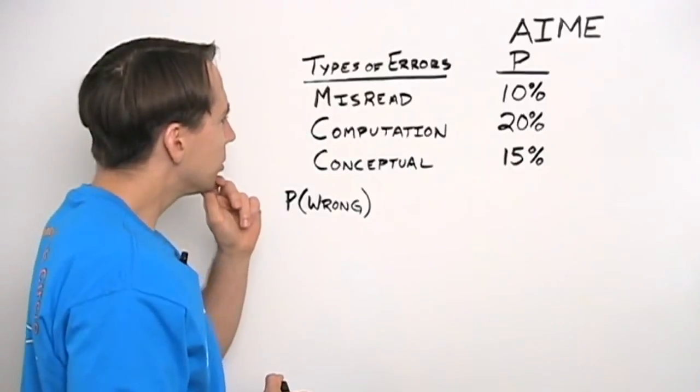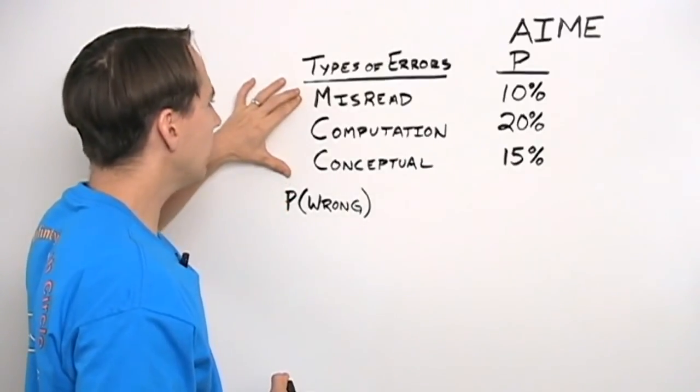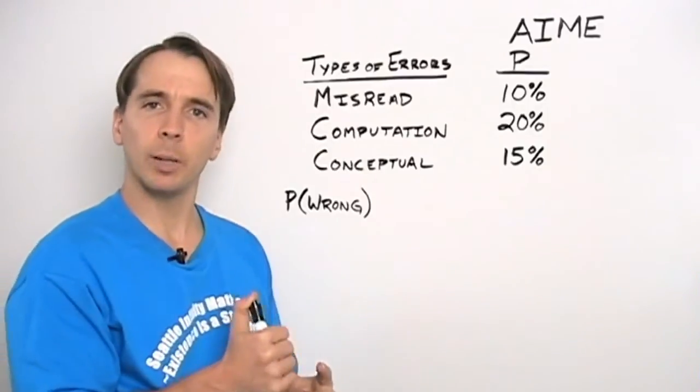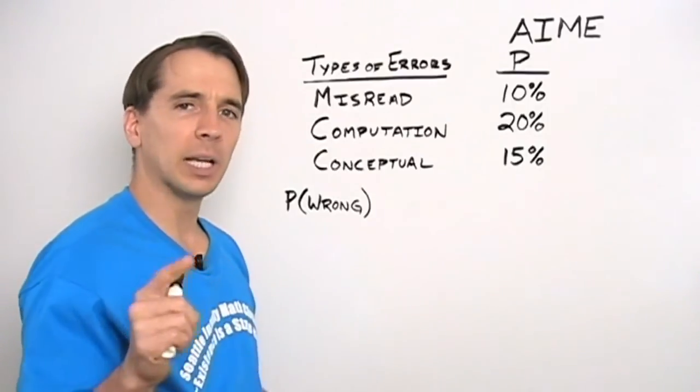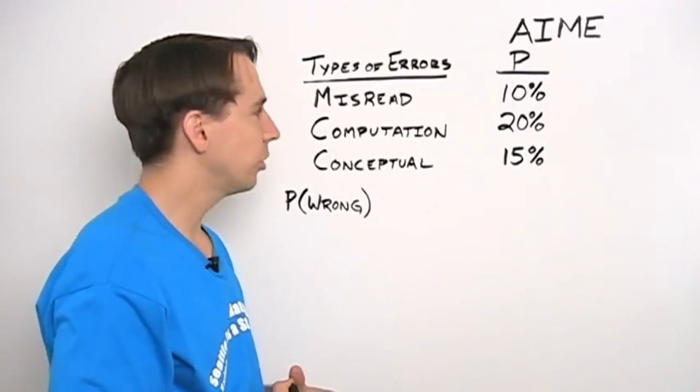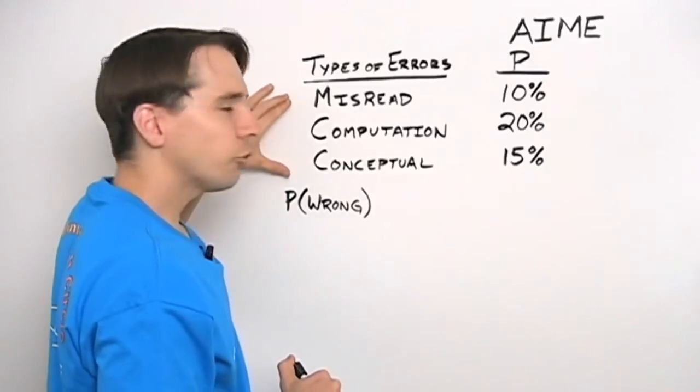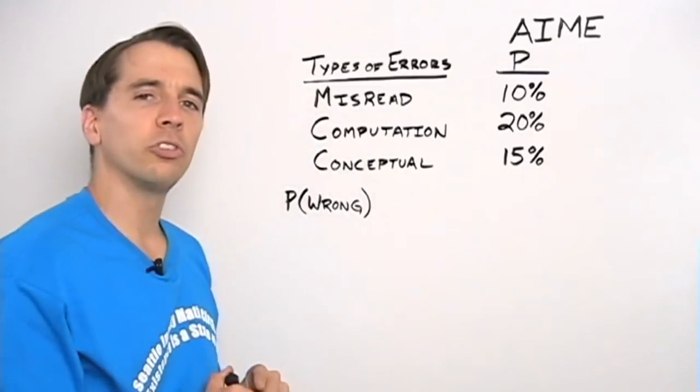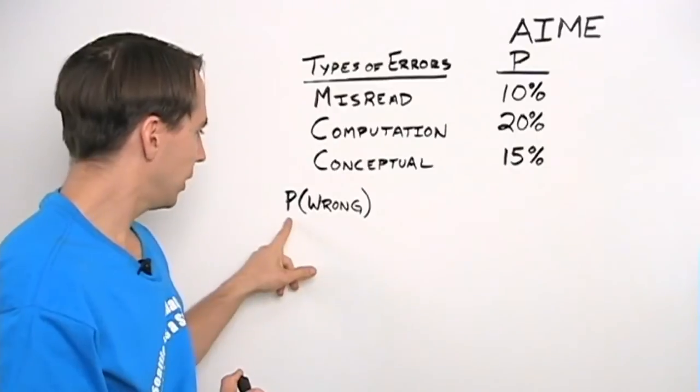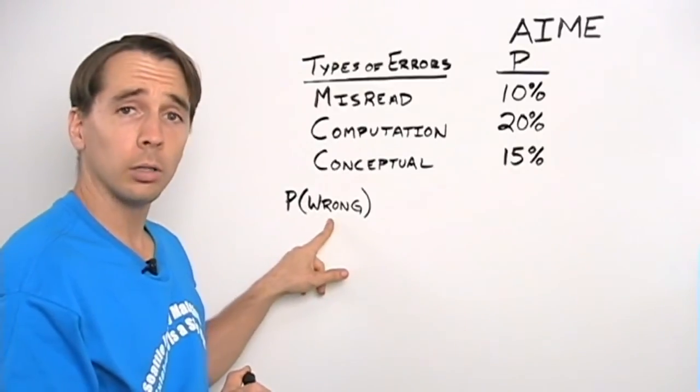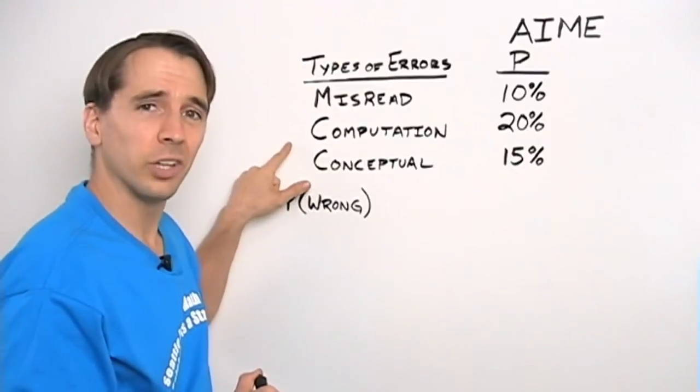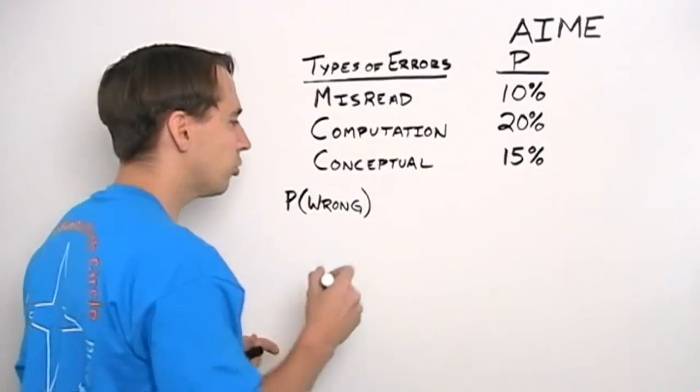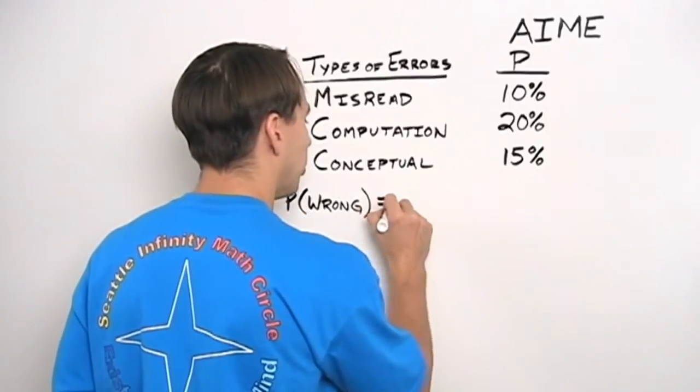But, well, we saw back with counting. When counting things that have a whole lot of casework, sometimes we can solve the problem by counting what we don't want instead. Let's try that here. With probability, we can do the same thing. So we want to find this probability. The probability that I'm wrong looks like that's going to take a lot of casework. So instead, let's try thinking about the probability that I'm right.